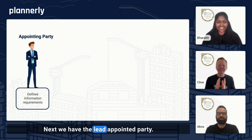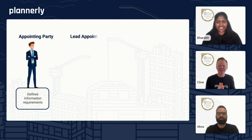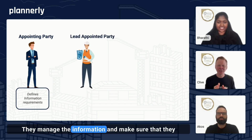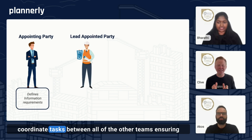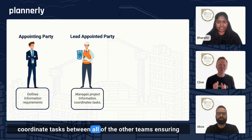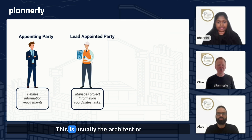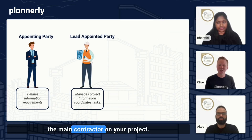Next, we have the lead appointed party. They manage the information and make sure that they coordinate tasks between all of the other teams, ensuring the right information is delivered at the right time. This is usually the architect or the main contractor on your project.